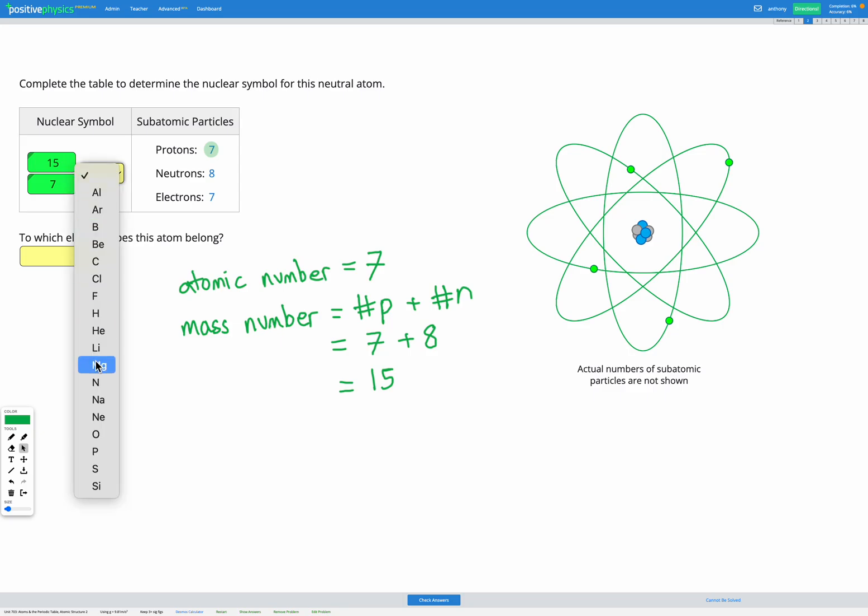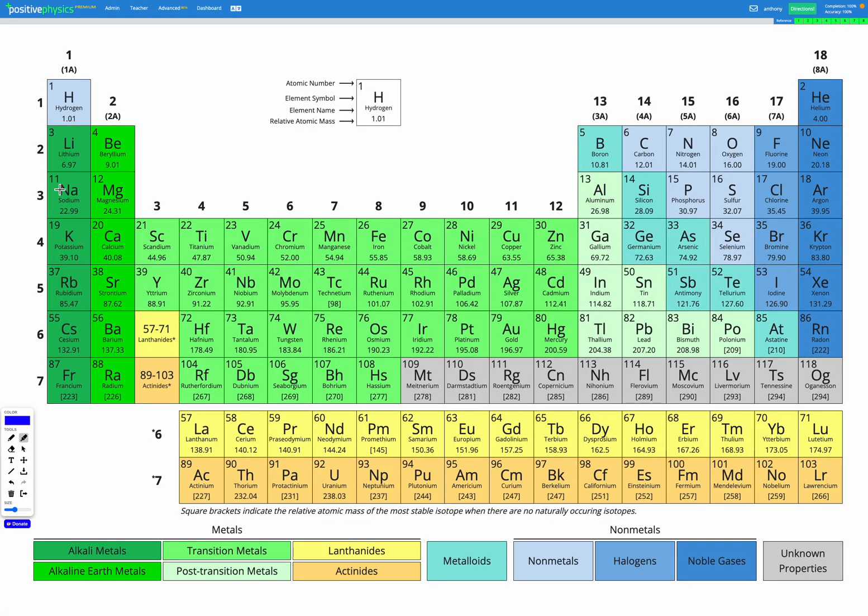Next, we need to decide which element is this an atom of. So we know that the element is given by the atomic number. And the atomic number here is seven. So let's go and look at our periodic table.